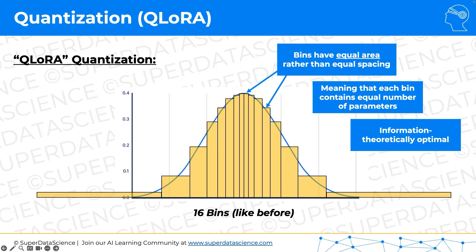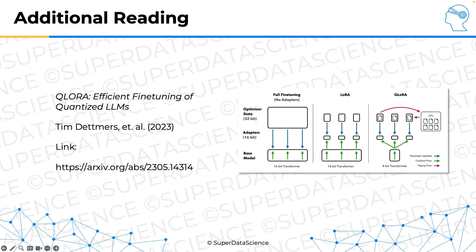They use 16 bins, which equals 4 bits. You can use a different value — 5 bits or 6 bits increases the number of bins and precision; 3 bits or 2 bits reduces them. But the paper shows that 4 bits is the optimal number: below 4 bits, at 3 bits, there starts to be instability in the model, whereas 4, 5, and 6 bits all perform quite similarly. So 4 bits is a great starting point. That's how QLORA quantization works.